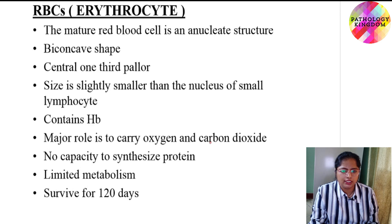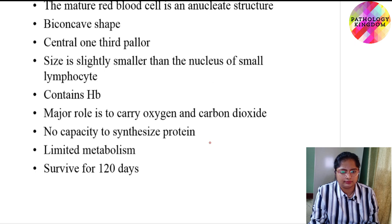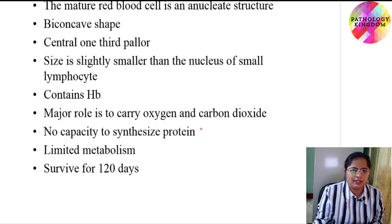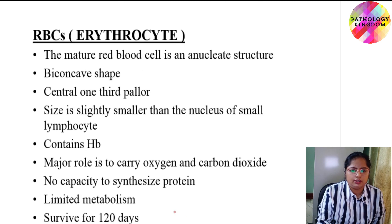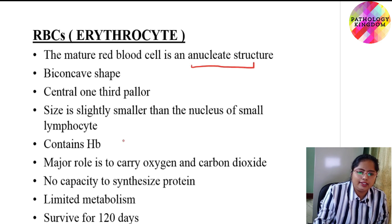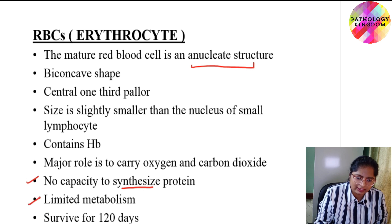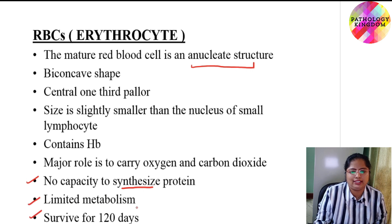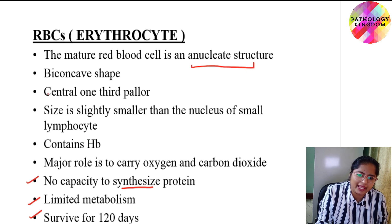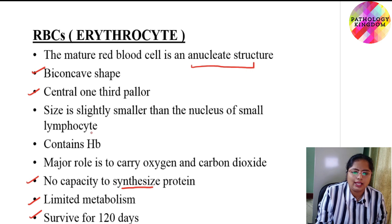Coming on to some facts regarding red blood cell or erythrocyte. The mature erythrocyte is an anucleate structure, meaning it has no capacity to synthesize protein. So it has limited metabolism, survives only for 120 days, and its normal shape is biconcave. It has central one-third pallor. Size is slightly smaller than the nucleus of a small lymphocyte.